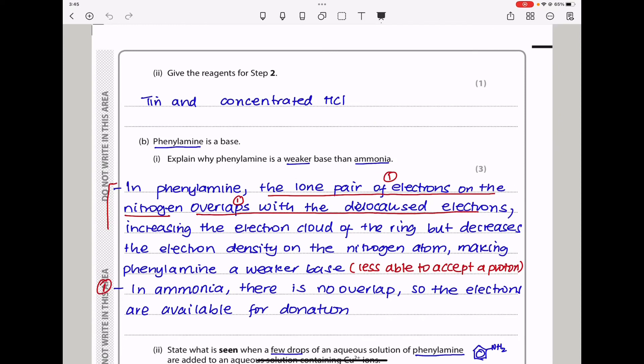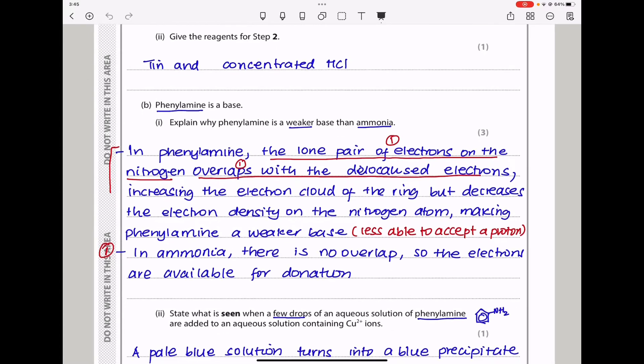In part two, give the reagents for step two. Like I already said, use tin and concentrated hydrochloric acid. That is a reduction reaction where nitrobenzene is converted into phenylamine.